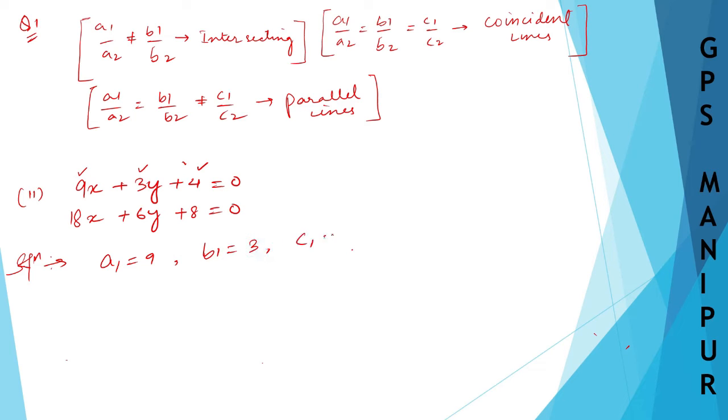So a1 is equal to 9, b1 is equal to 3, and c1 is equal to 4. And this one is a2, b2, and c2. So a2 is equal to 18, b2 is equal to 6, and c2 is equal to 8.